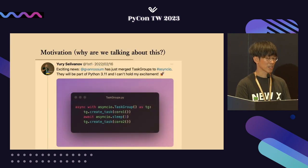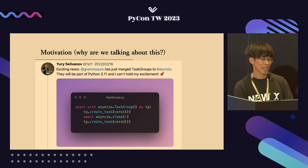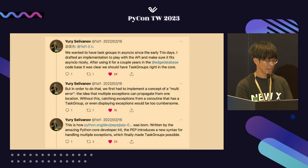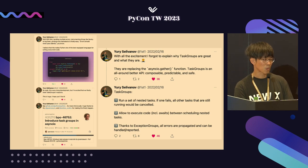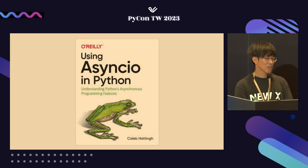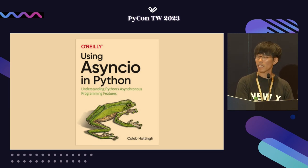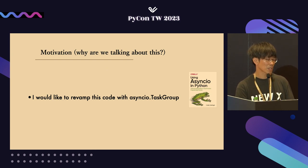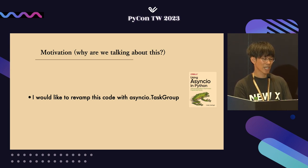Why am I giving this talk? There are two main reasons. I came across a tweet by Python core developer Yuri — one of my heroes and the author of the async/await paper. When task group was merged, he kept tweeting with excitement. The first reason is that I wanted to understand what was so amazing — at first I didn't understand why he was so excited. The second reason is a favourite book on using asyncio in Python published by O'Reilly. The code for 'hello world' is rather long, and I found that asyncio.TaskGroup can simplify it. I'm giving this talk to share the simple and powerful asyncio with all of you.